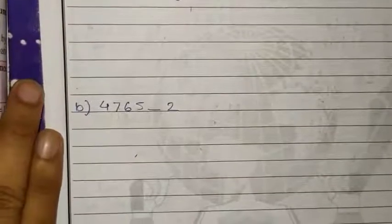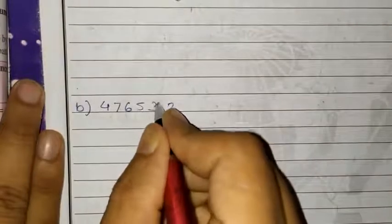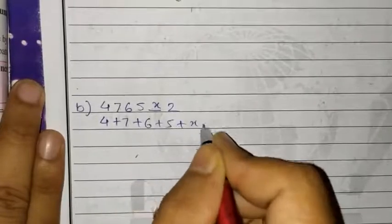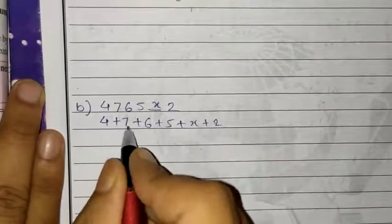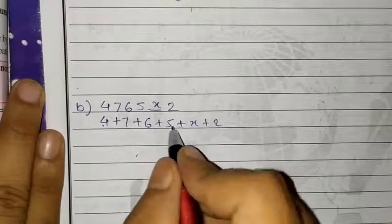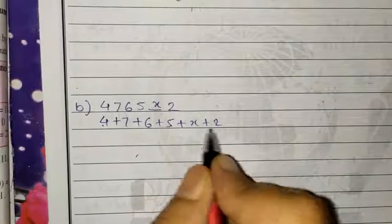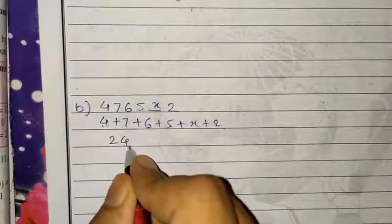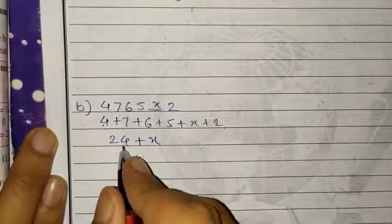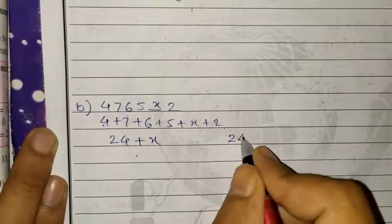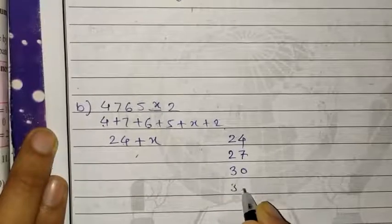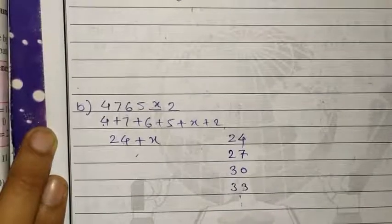Now part B — same procedure. We assume the missing number is X. The number is 4765X2. We do the addition: 4 plus 7 plus 6 plus 5 plus X plus 2. So 4 plus 7 is 11, 11 plus 6 is 17, 17 plus 5 is 22, and 22 plus 2 is 24 plus X. The multiples of 3 after 24 are 27, 30, 33, and so on.